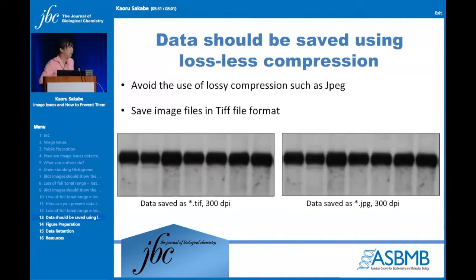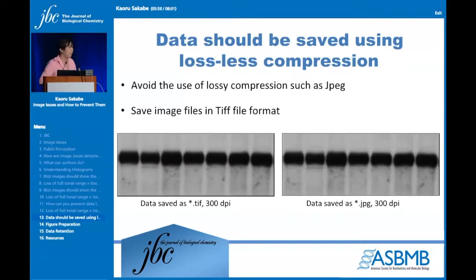Another thing is how you're saving your data. You want to save your Western blot files or any imaging files as TIFF files — it's a lossless compression format. Here are two Western blots, both at 300 DPI, but one saved as a TIFF and one saved as a JPEG. There are little lines going through the JPEG as well as some pixelation. Any of these artifacts may cause a reviewer to question whether you manipulated the image, and it becomes much harder to demonstrate you haven't.